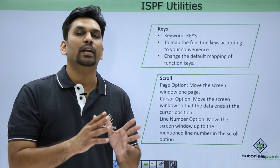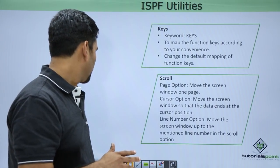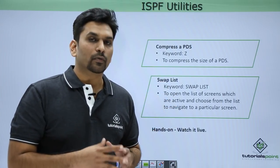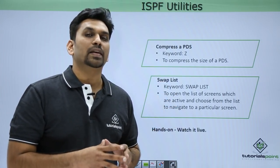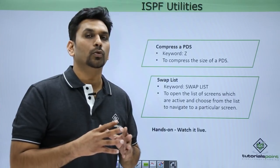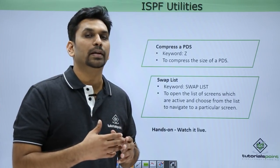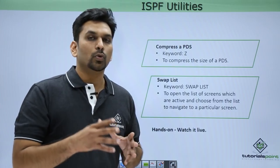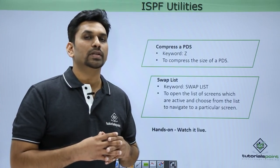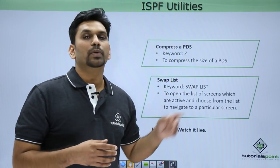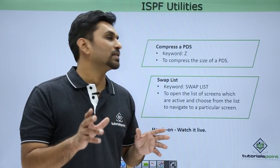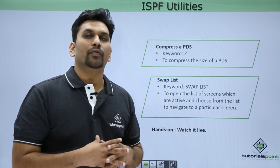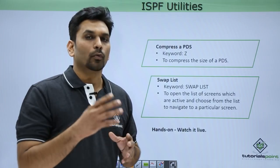Next is the Compress command. Suppose you have created a PDS that is almost full and it is not allowing you to add one or two more members, saying the PDS is full. You can compress the size of the PDS by typing 'Z' in front of the PDS name and pressing Enter. It will show that the PDS is compressed.